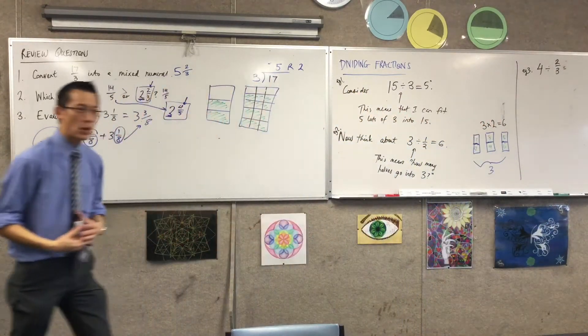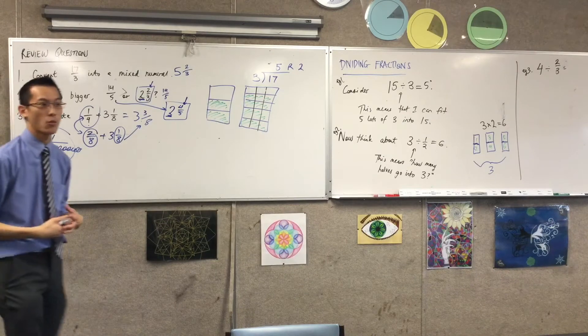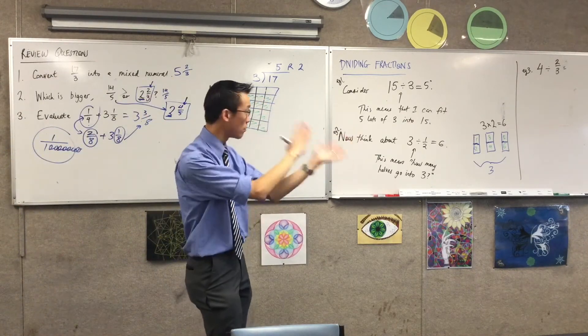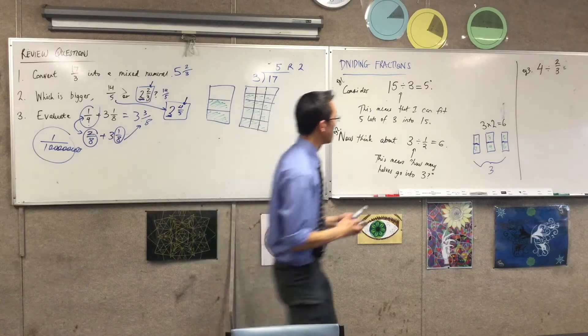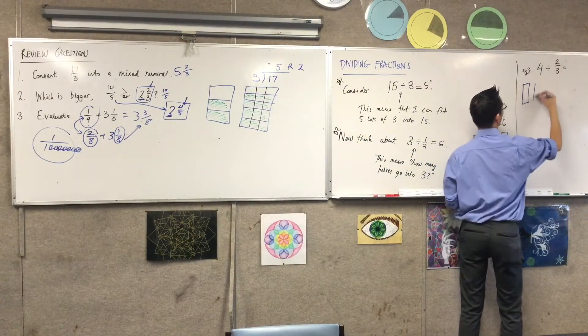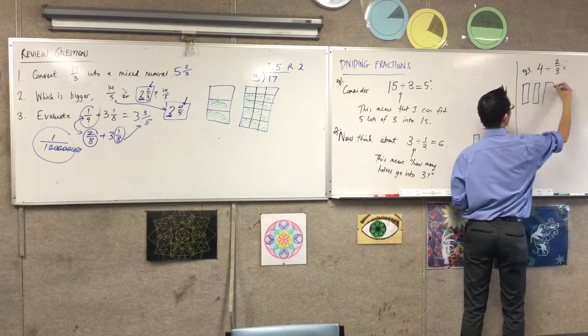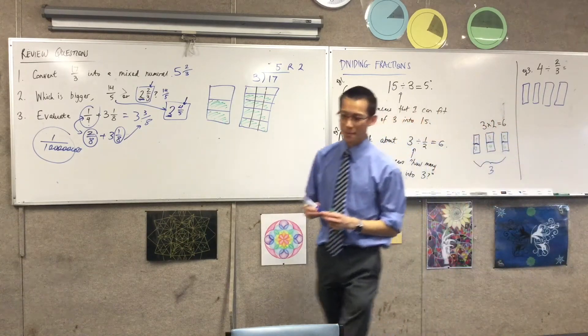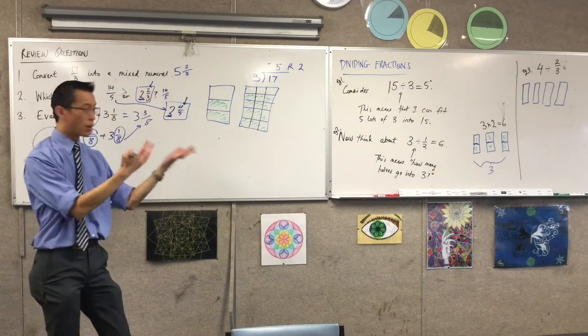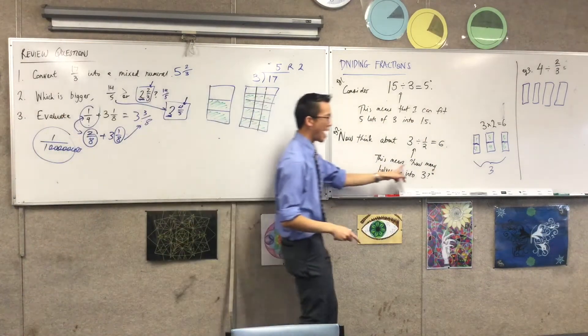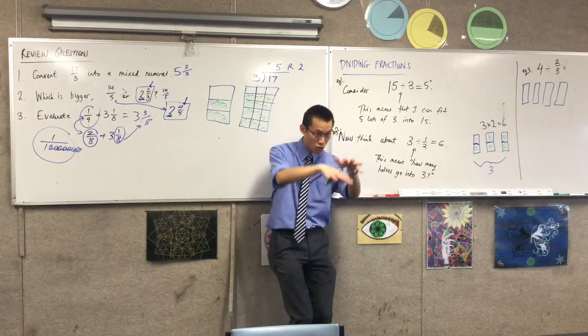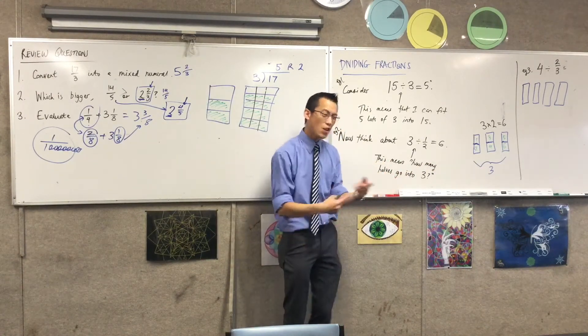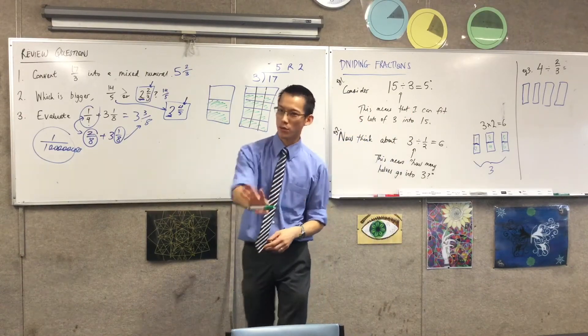Again, we're going to use a picture to help us and then see if we can come up with a rule for this. Four. Let's draw our four blocks. We've got our picture happening. Now, there are my four blocks. And I'm trying to say, how many two-thirds, like that's the size of the block I'm interested in. How many of those can I fit into that four?